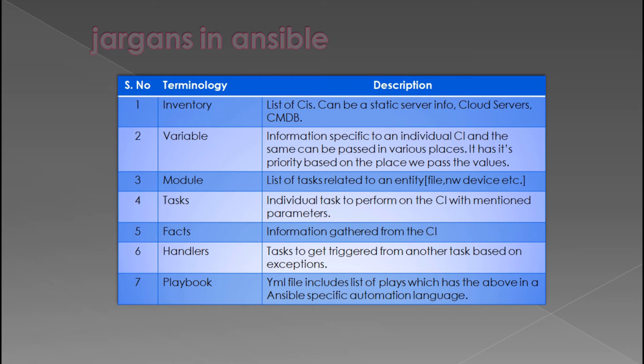There are certain jargons in Ansible to understand. Inventory is the list of machines on which we execute our code. Variables store specific individual data and can be defined per host or per group. A module is a list of tasks related to a specific entity — for example, a particular network device or file type — and can be reused across playbooks.